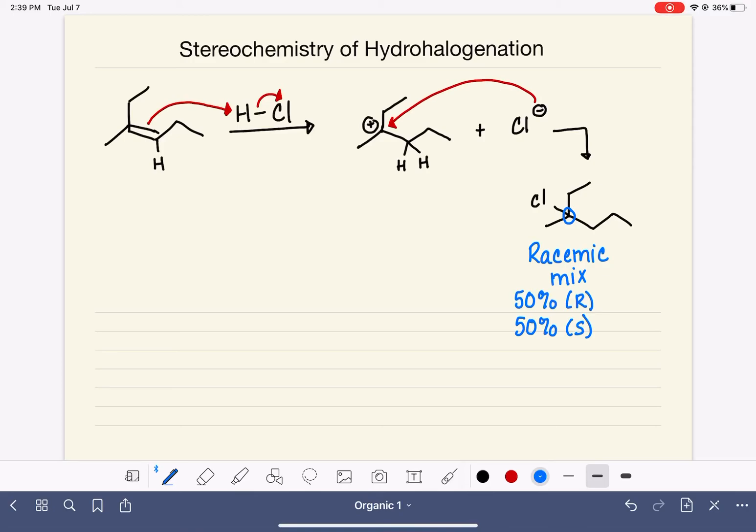And again, this is for the exact same reason that we see this with SN1. So in this step right here, in this part of the reaction, when the chloride bonds to the C positive,